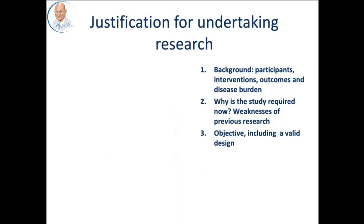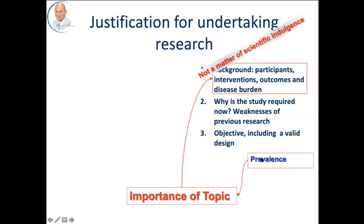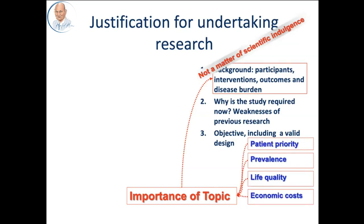The second element of integrity is the justification for undertaking research. The first thing you need to do is understand the background and importance of the topic. To understand this, you need to examine the prevalence of the disease, the effect on quality of life, the economic effect, and the priority of patients. It's not a matter of scientific indulgence, and it's not a decision a supervisor will make over coffee with the student as to what topic to study.